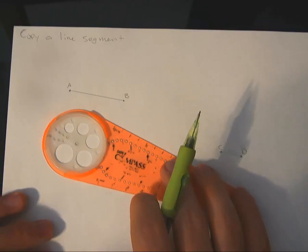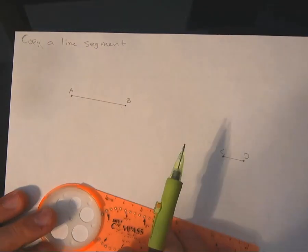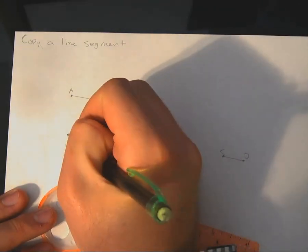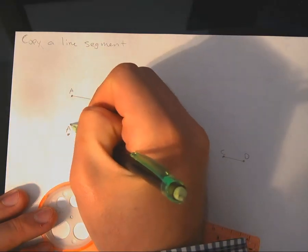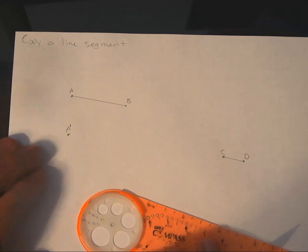All right, so first thing we're going to talk about today is copying a line segment. I have a line segment here AB, and I want to be able to copy that elsewhere. Let's put another point down here. I'm just going to call that point A prime.